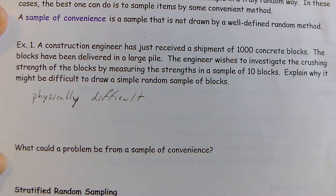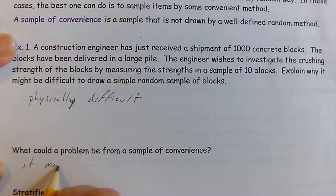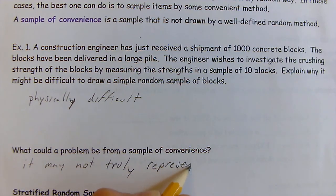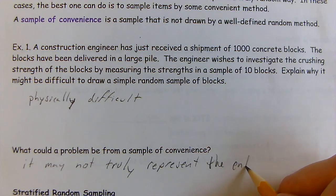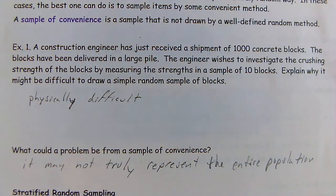So what could be a problem with a sample of convenience? It's not going to truly represent the entire population — for instance, you could have grabbed a bad batch of blocks. It's not a simple random sample because not everyone was equally likely to be chosen, so it's not going to represent the population. If you go to the mall and walk into one store and interview everyone there, that would also be convenience sampling.